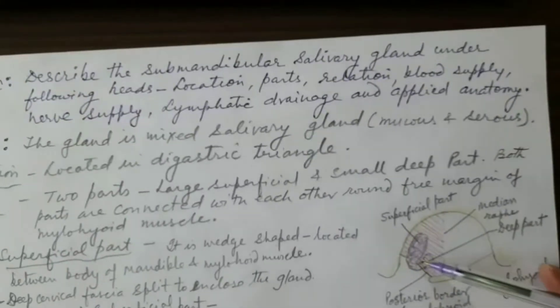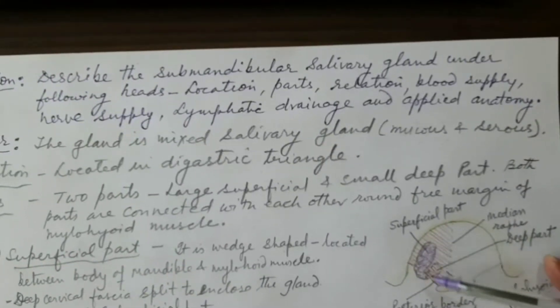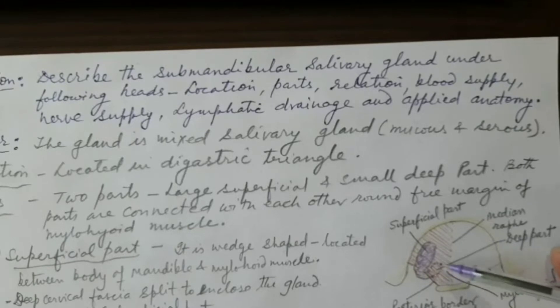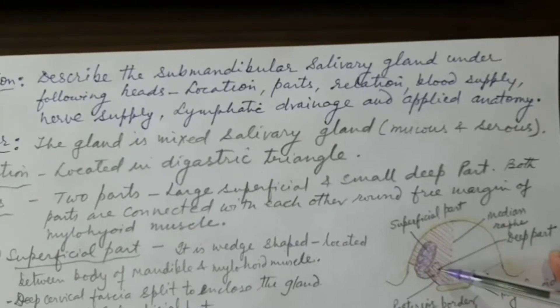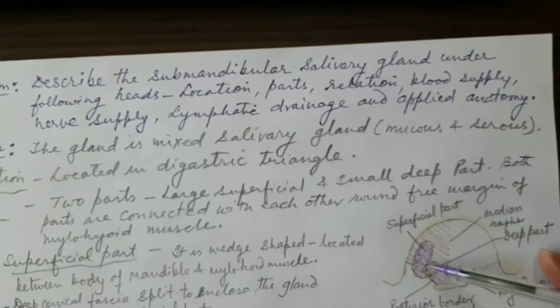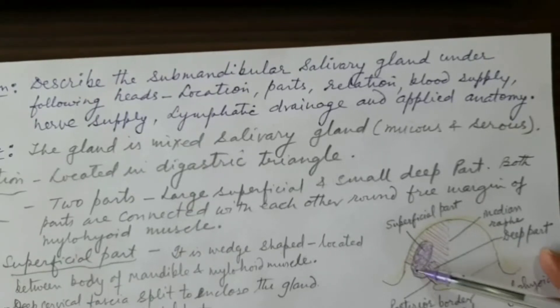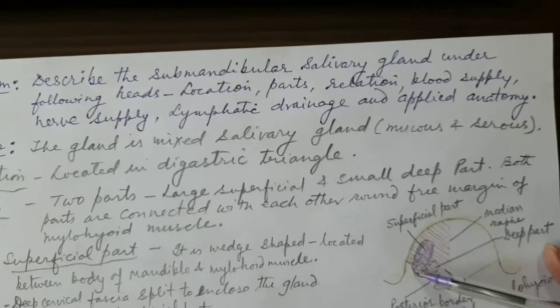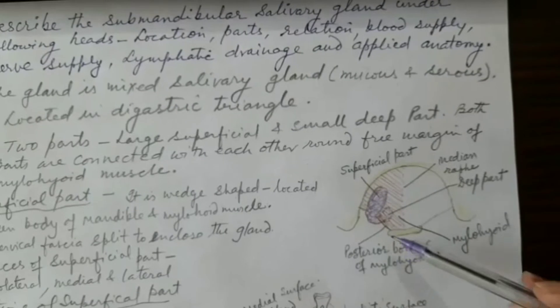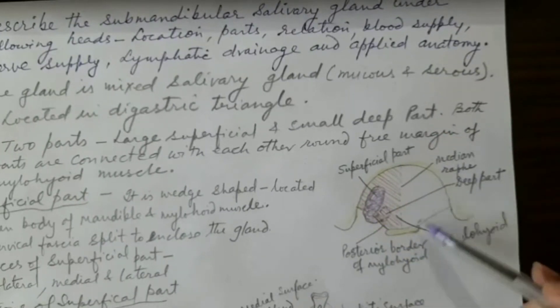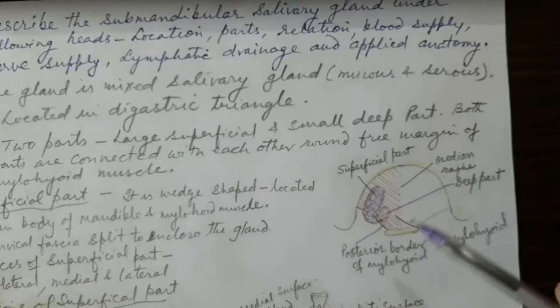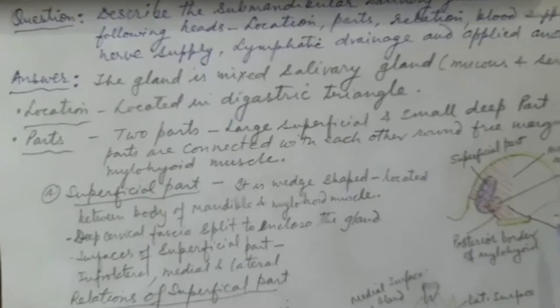As for the parts: a large superficial part lies on the under surface of the mylohyoid muscle, and a small deeper part lies on the superior surface of the mylohyoid muscle, hidden behind its fibers. The two parts are continuous with each other around the free posterior margin of the mylohyoid muscle.